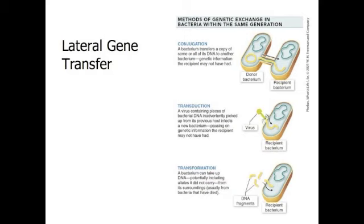Bacteria can also transfer genetic information laterally to other individuals within the same generation through conjugation — the process by which one bacterium transfers a copy of some of its genetic information to another bacterium, even when the two are different species. Through transduction, a bacteriophage virus infects a bacterial cell and sometimes new virus particles inadvertently contain pieces of the bacterium's DNA. Through transformation, bacterial cells can scavenge DNA released by dead bacterial cells in their environment. DNA is transferred from one bacterium to another by these three different methods.